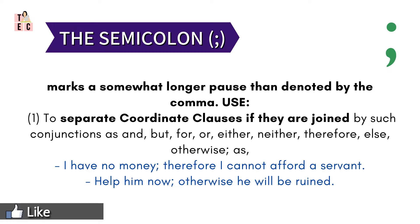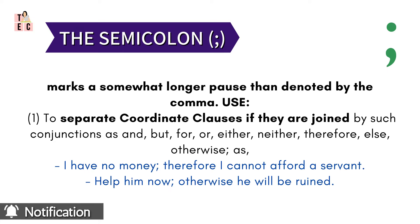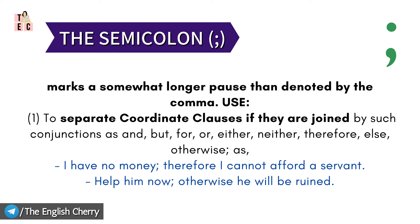The first use of semicolon is to separate the coordinate clause if they are joined by conjunctions such as and, but, for, or, either, neither, therefore, else, otherwise. For example: 'I have no money; therefore, I cannot afford a servant.' Here, 'I have no money' is a clause complete in itself, but it has additional information attached, so a semicolon creates a pause before 'therefore, I cannot afford a servant.'